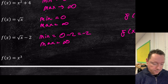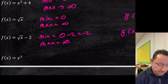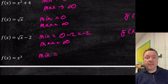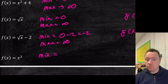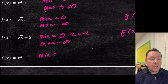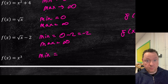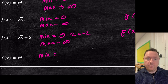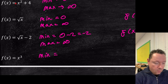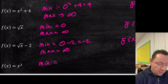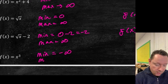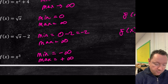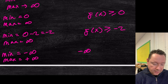For f(x) = x^(1/3) — the cube root — unlike even powers, odd powers can be negative. The cube root of −8 is −2 because (−2)³ = −8. So for odd powers, x can range from −∞ to +∞. The range is −∞ ≤ f(x) ≤ ∞. This is only for odd powers; for even powers the minimum starts at 0.